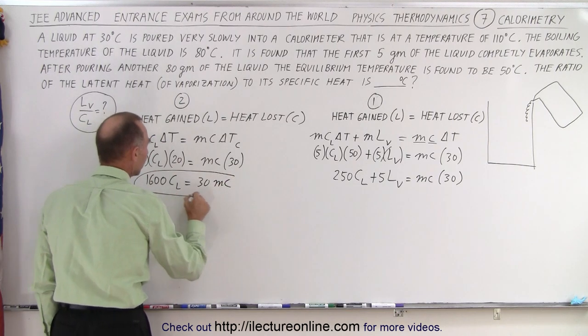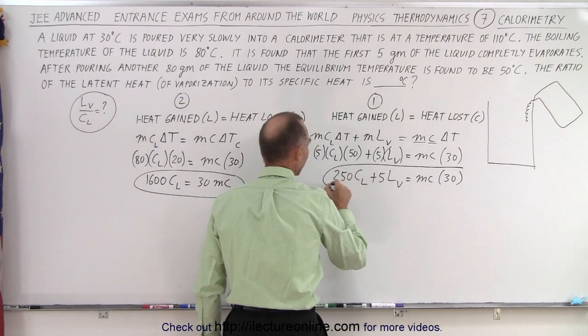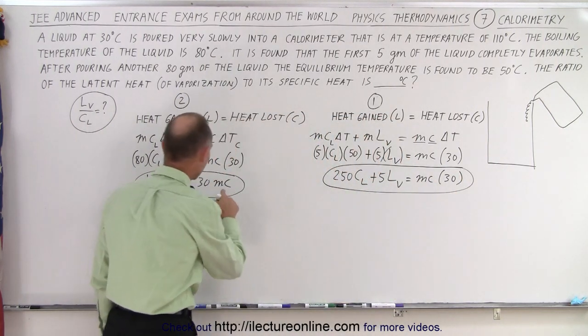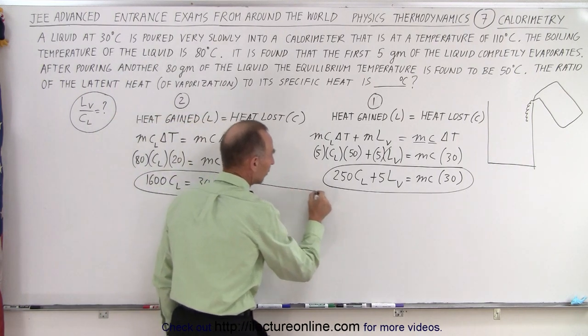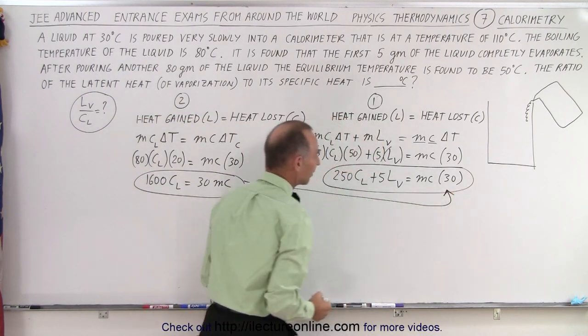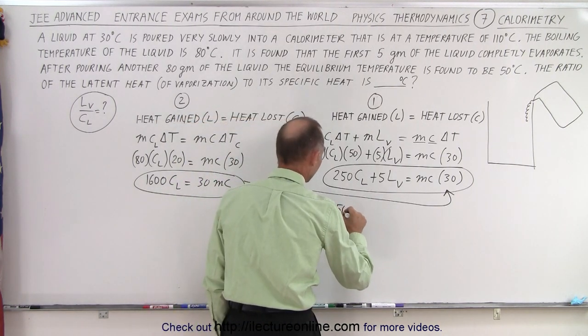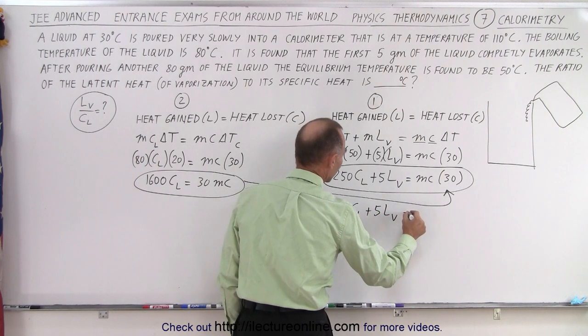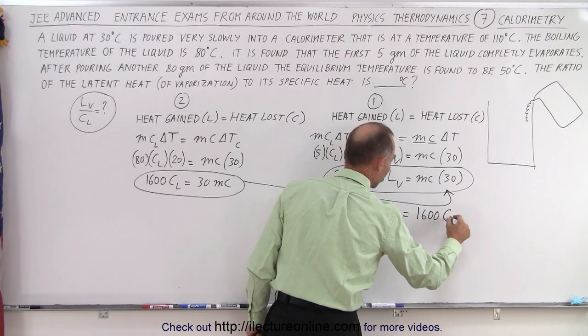Now notice that this is what we got from the first equation, second equation, this is what we got from the second equation. Notice on the right side we have MC times 30. We have MC times 30. Those are equal to each other, so we can plug this into the right side of that equation to get rid of the MC of the calorimeter.